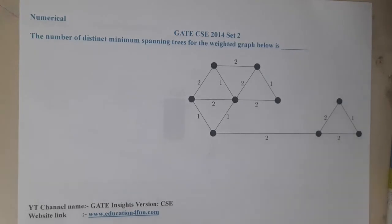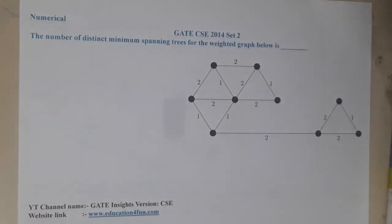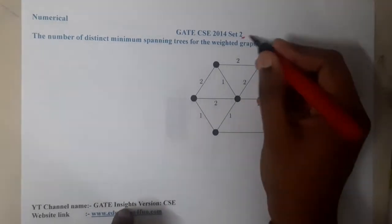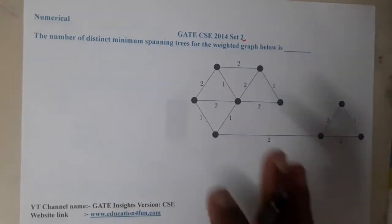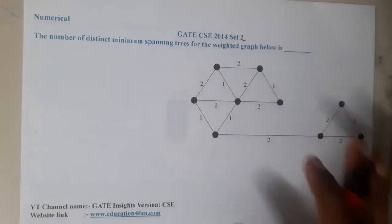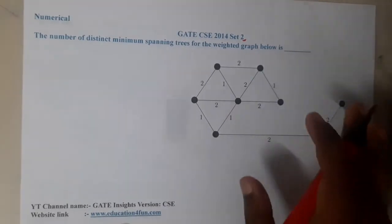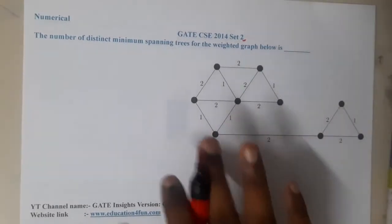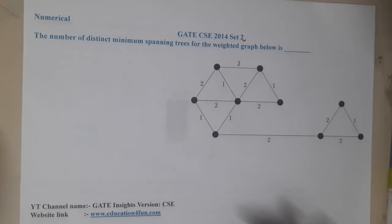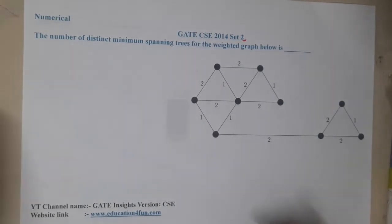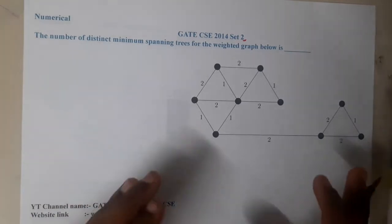Hello guys, we are back with our next lecture. This question belongs to GATE CSE 2014 Set 2. The question is: find the number of distinct minimum spanning trees for the weighted graph shown. So basically, for this graph, how many minimum spanning trees can we draw? Let us first understand the logic.